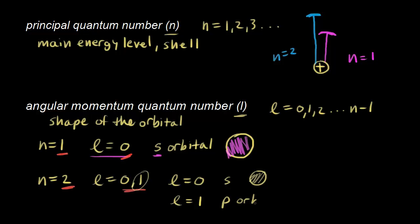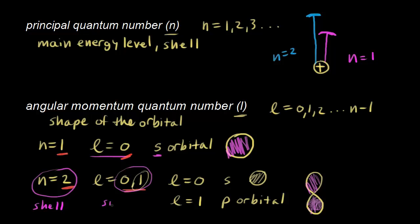The shape of a p orbital is a dumbbell or bow-tie shape — a three-dimensional region of space where the electron is most likely to be found. These orbitals are sometimes called subshells. If n equals two is the shell, then L equals zero and L equals one are the subshells — an s orbital and a p orbital respectively.